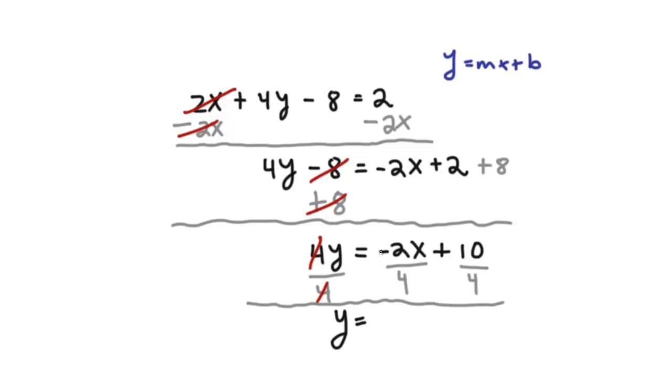And then this here, we have negative 2 over 4, so that's just negative 1 half. Don't forget the x. And then this is just plus, we can reduce this to 5 over 2. And now, as you can see, this here is our equation, y equals mx plus b.